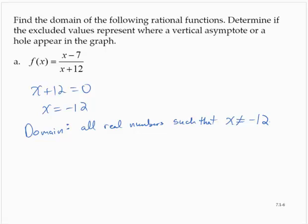Determine if the excluded values represent a vertical asymptote or a hole in the graph. If we were to substitute negative 12 in, we would get negative 19 over 0. So when that happens, that tells us we have a vertical asymptote. When you have a non-zero number over 0, that would tell us a vertical asymptote.